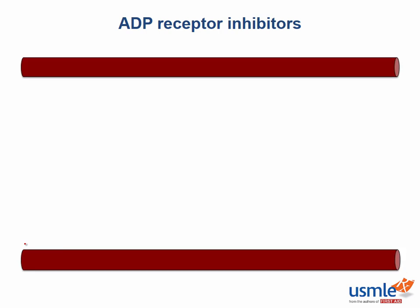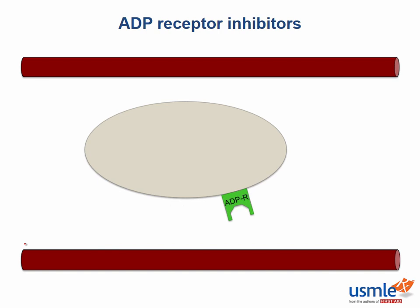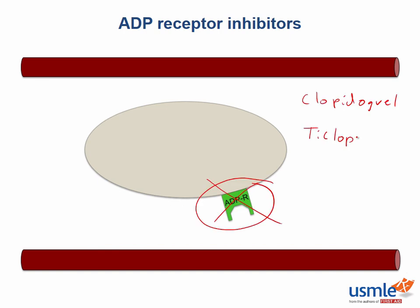Some antiplatelet medications act by irreversibly blocking the ADP receptor, as you can see here. These medications include clopidogrel, ticlopidine, prasugrel, and ticagrelor.